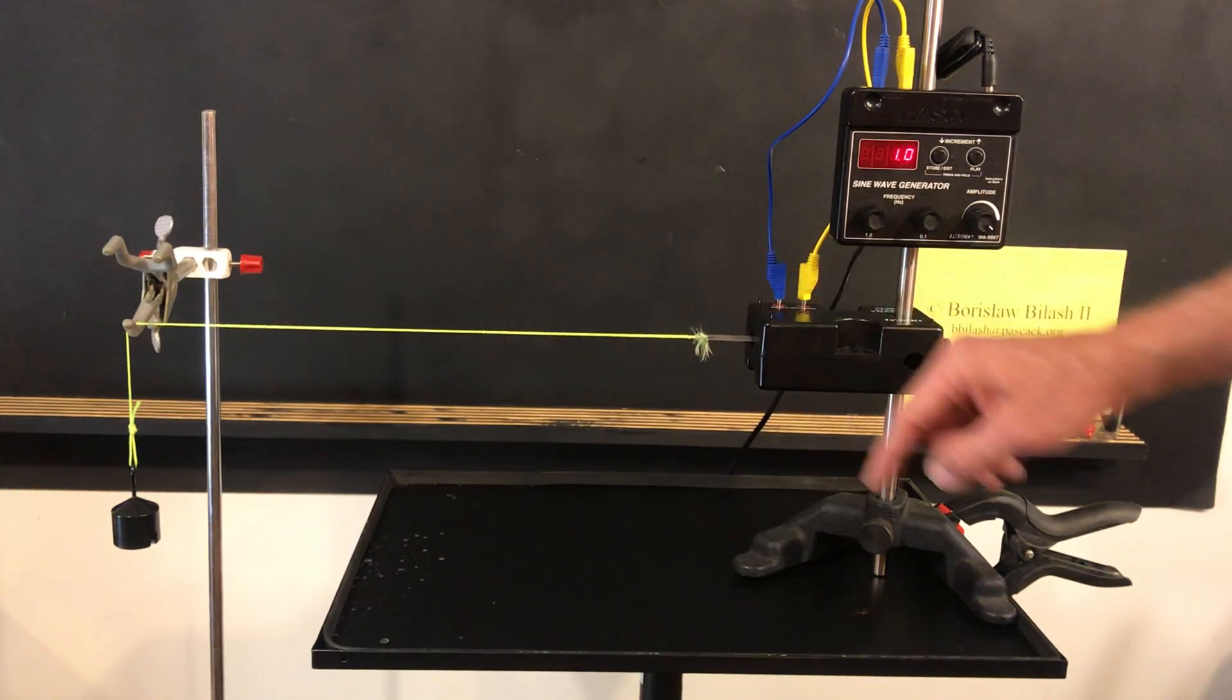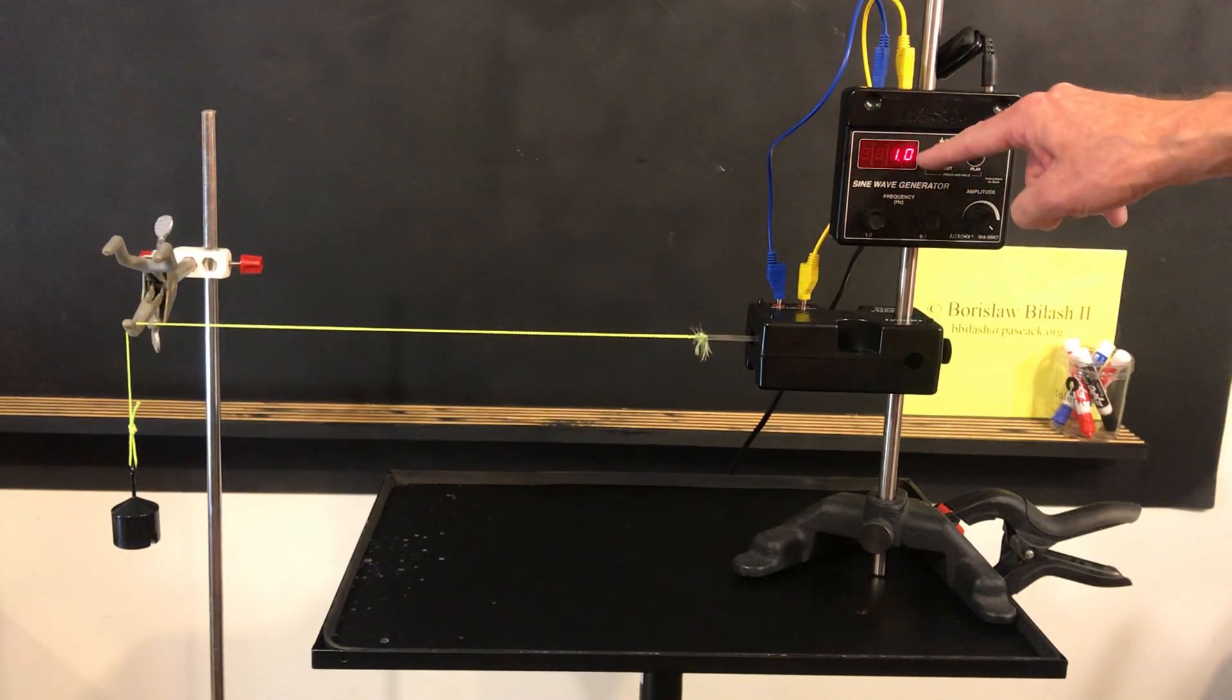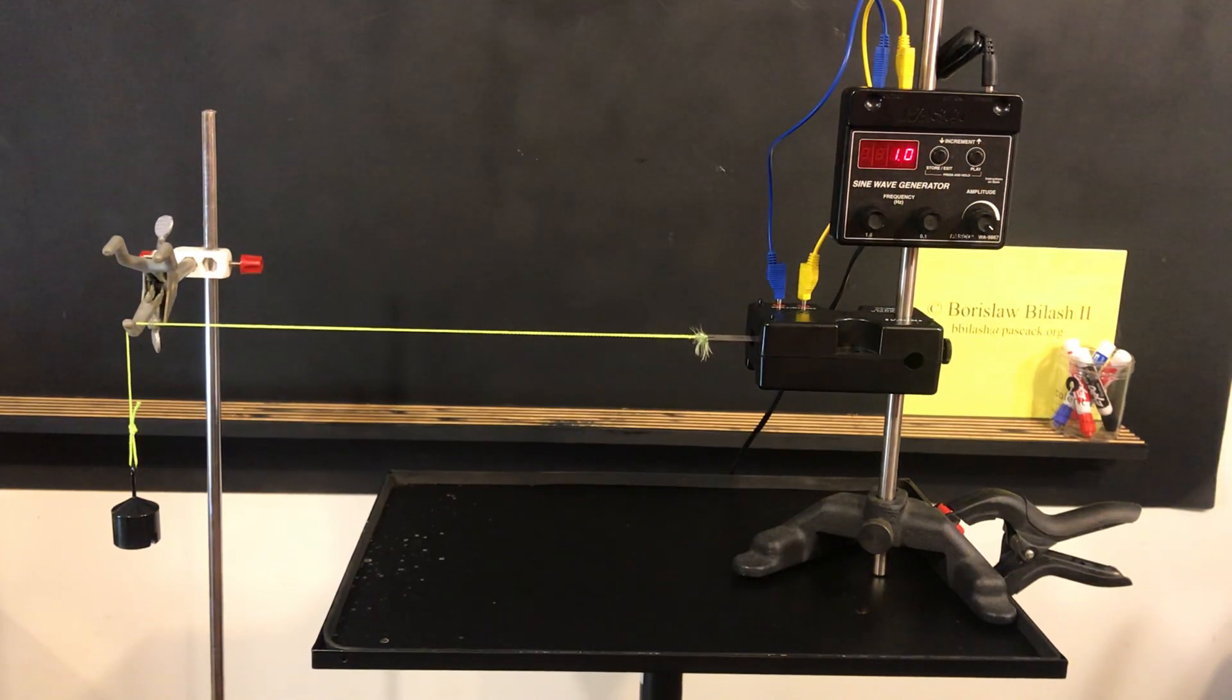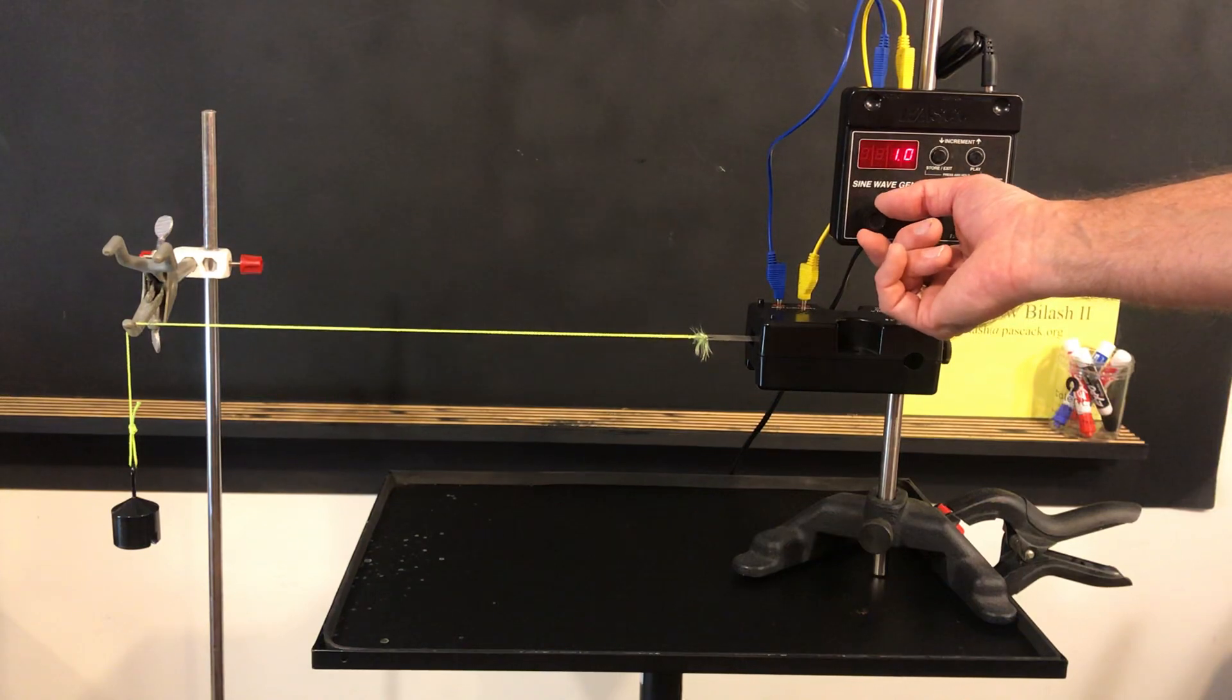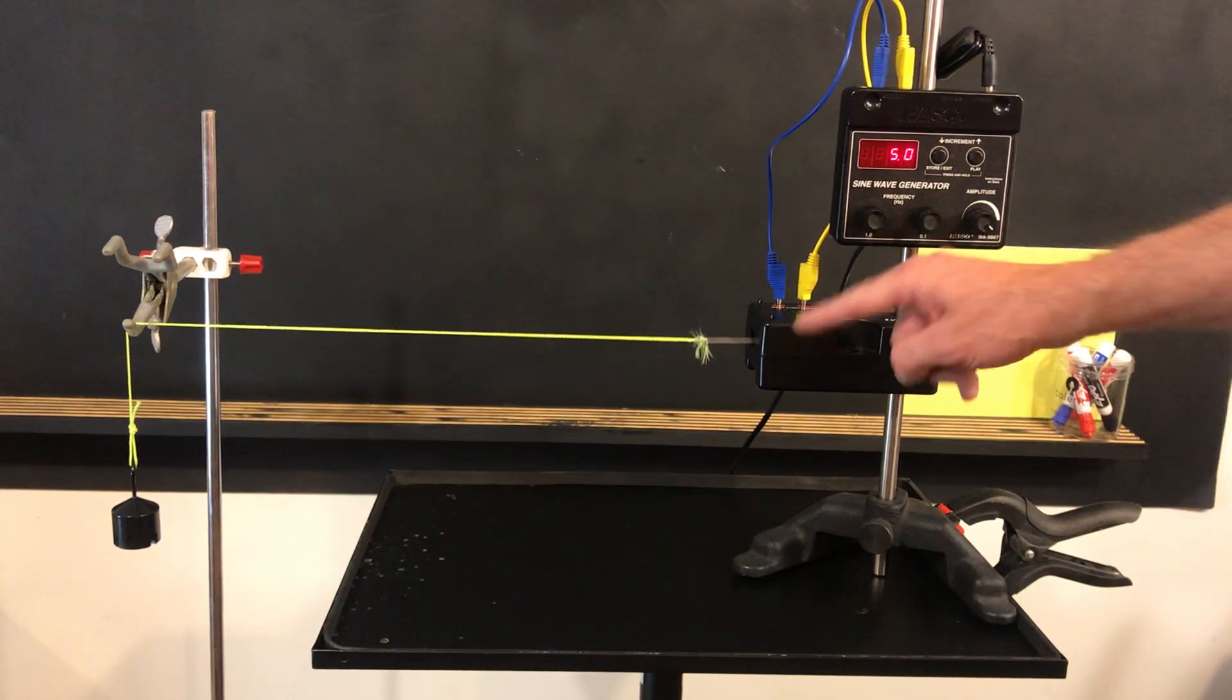That up and down motion of the tail is controlled by the sine wave generator, which is now set to 1 Hz. If I increase the number of Hz of the sine generator, you'll notice that the tail corresponds to the same frequency.